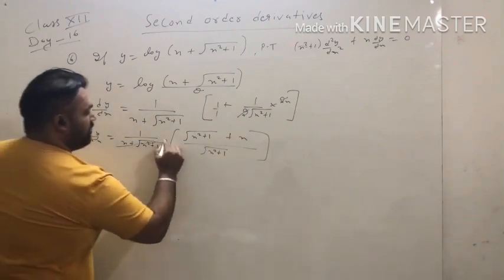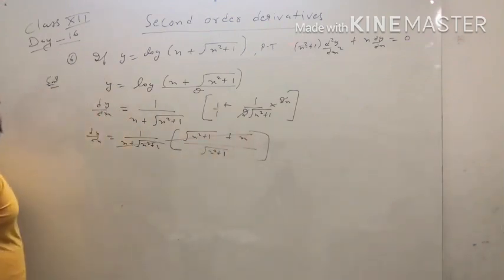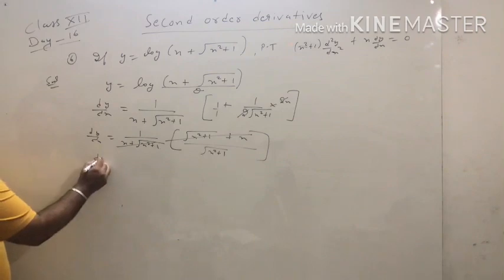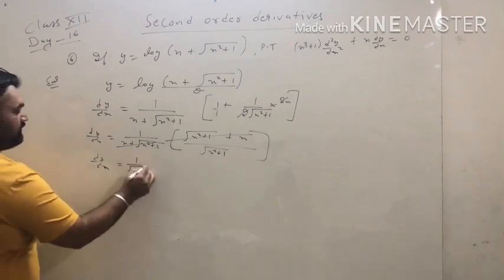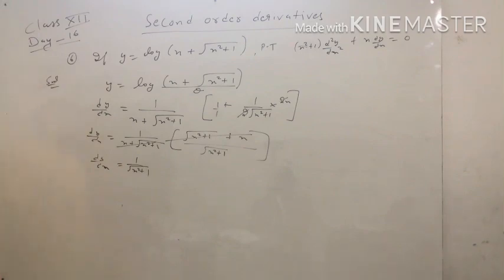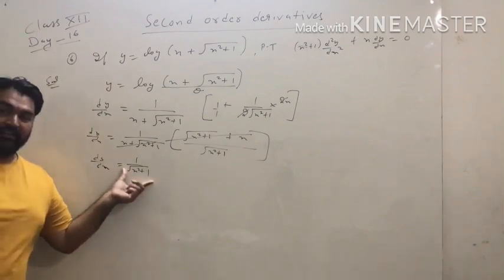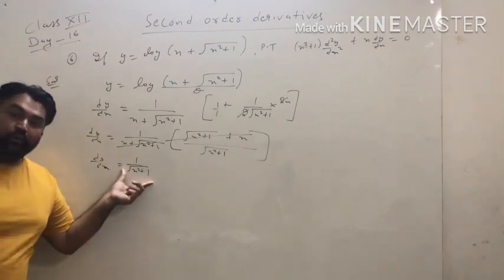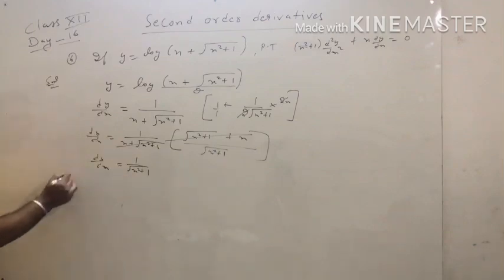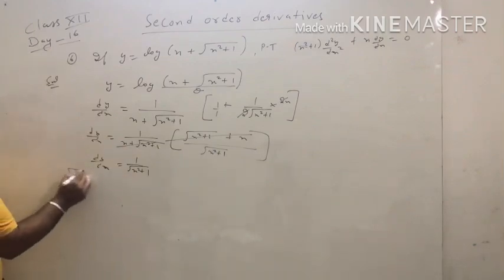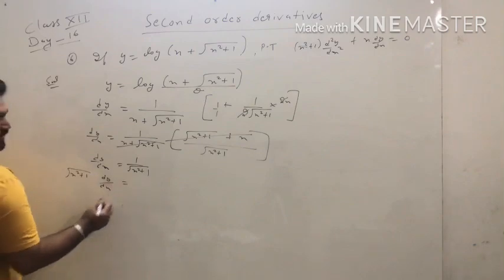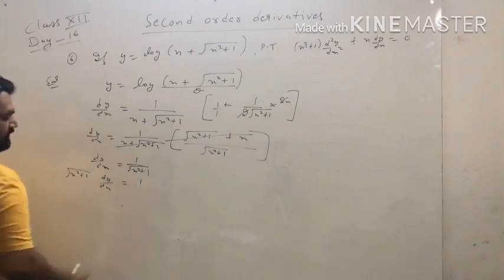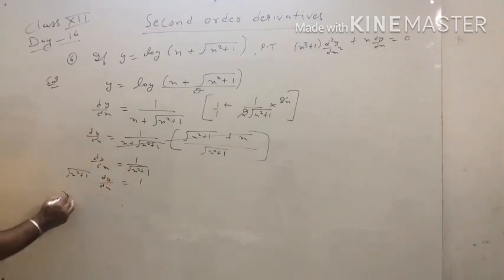Now take the common denominator. The LCM is √(x² + 1), giving (√(x² + 1) + x) in the numerator. These two terms cancel with each other, so we are left with 1/√(x² + 1). The denominator term is √(x² + 1) — shift this root to the left side. Now squaring both sides to eliminate the root.